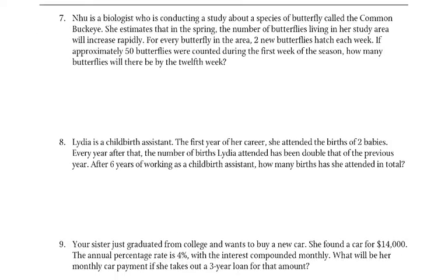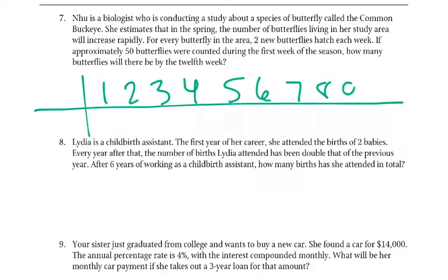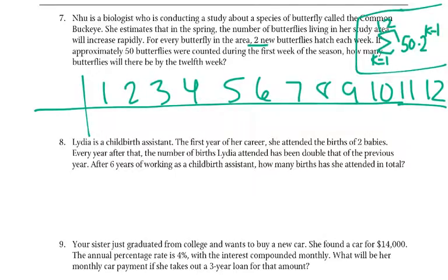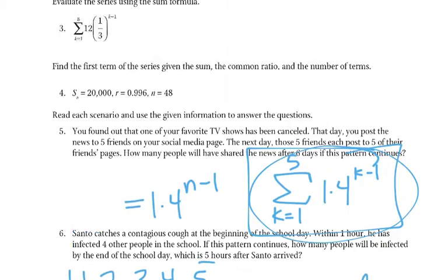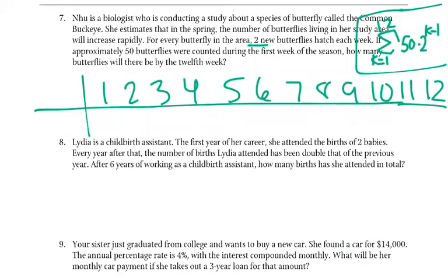Number 7. Nua is a biologist conducting a study about the common buckeye butterfly. She estimates that in the spring, the number of butterflies will increase rapidly. For every butterfly in the area, two new butterflies hatch each week. Approximately 50 butterflies were counted during the first week. How many butterflies will there be by the twelfth week? Now that we're getting at higher numbers, it might be easier to use that summation. We started with 50, and basically they're doubling, so timesing by 2 every time. We start at 1 and we go up to 12. We could use that and use a calculator. But I think this is easier.